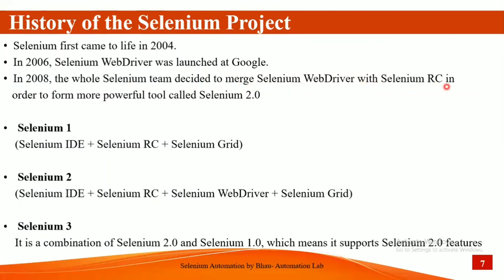In 2008, the whole Selenium team decided to merge Selenium WebDriver with Selenium RC — Selenium Remote Control, the older outdated version — to create a more powerful tool: Selenium 2.0. Selenium 1 was created as a combination of Selenium IDE, Selenium RC, and Selenium Grid. Selenium Grid is an important concept used to run scripts on multiple operating systems and browsers in parallel.